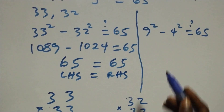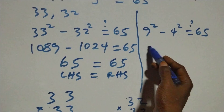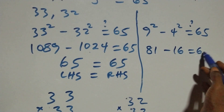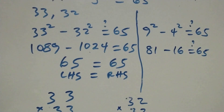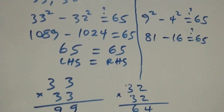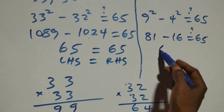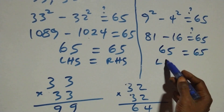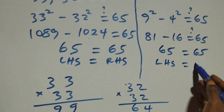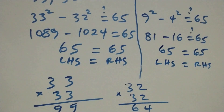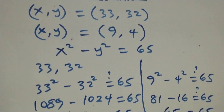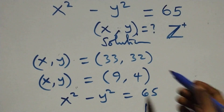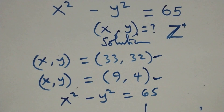For the second case: 9 squared is 81, minus 4 squared which is 16, equals 65. So 81 minus 16 equals 65, which equals 65. Left-hand side equals right-hand side. We therefore conclude that both (33, 32) and (9, 4) are positive integer solutions to the given equation.